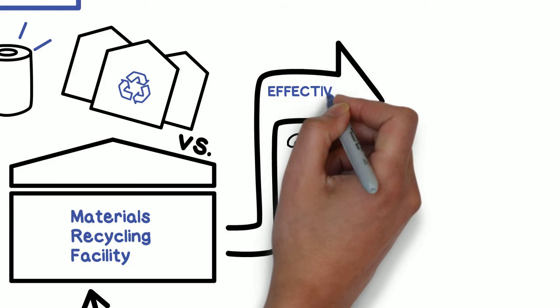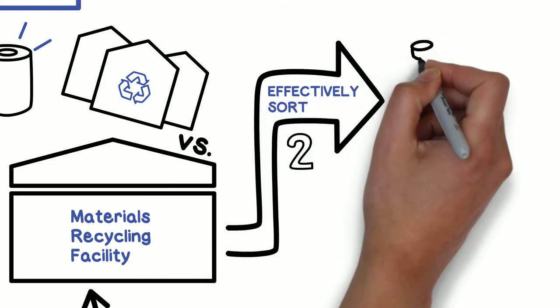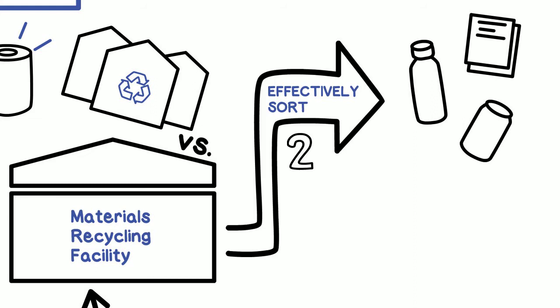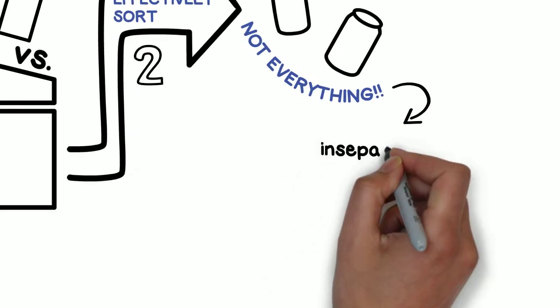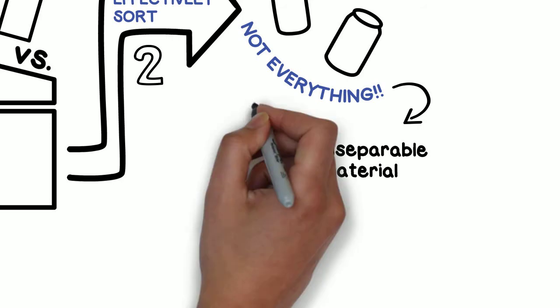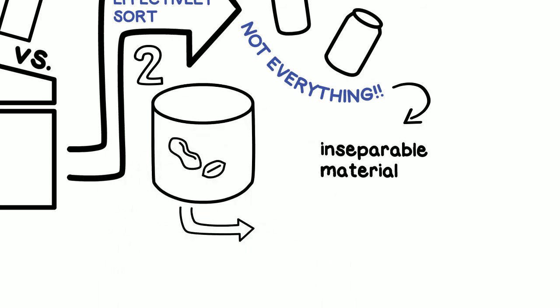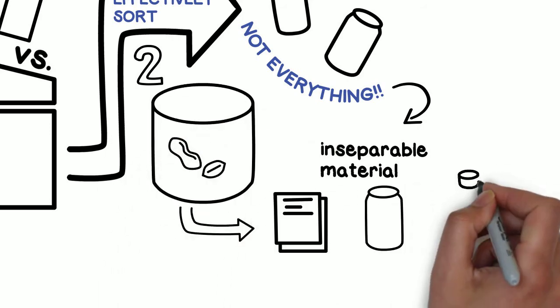Secondly, can the items be sorted effectively? Materials recycling facilities are able to sort many types of material, but not everything. One example is when the materials are inseparable. A nut canister, which is composed of paper, metal, and plastic, cannot be separated into individual components and as a result is not accepted in your bin or cart.